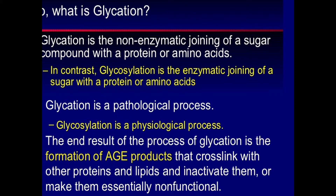Glycation is a pathological process while glycosylation is a physiological process. The end result of glycation is the formation of advanced glycation end products (AGEs), which are highly dangerous. Multiple complications of diabetes occur because of the formation of these AGEs — the attachment of a glucose molecule to a protein or amino acid.